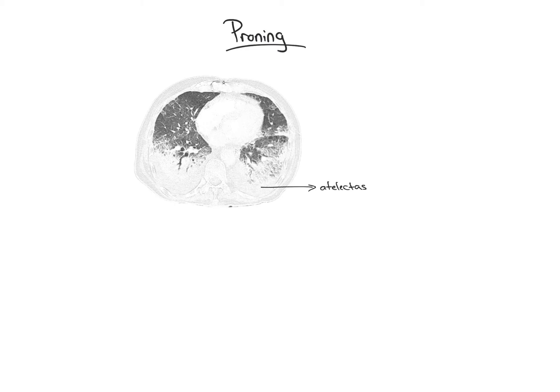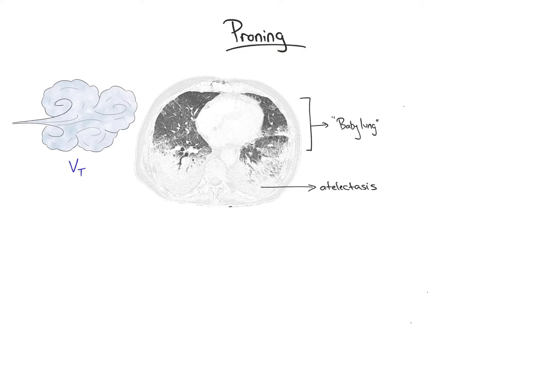How does prone positioning work to decrease mortality? Shown is a CT slice from a patient with ARDS. Note the characteristic bilateral and dependent areas of involvement in the supine position. These areas of consolidation are partially composed of atelectatic lung, while the superior anterior lung zones are relatively less affected — this area is also referred to as the baby lung. Therefore, in the supine position the tidal volume is delivered predominantly to these less affected lung zones, resulting in overdistension, stress, and strain, decreased V/Q matching, increased lung stress, and increased ventilator-induced lung injury.